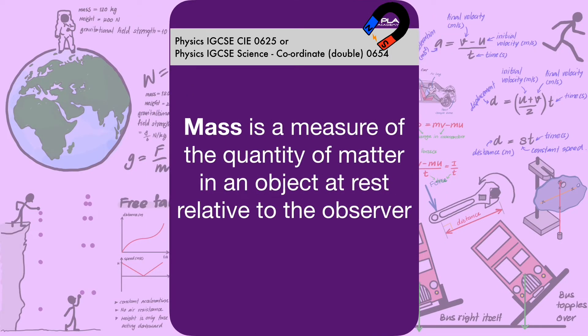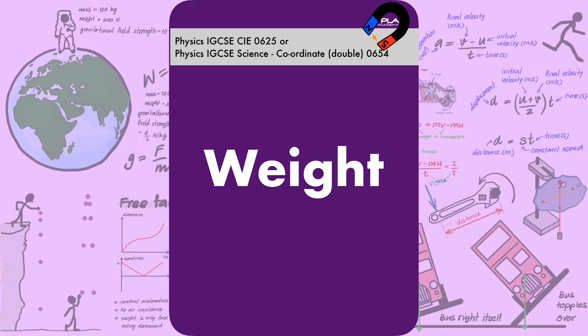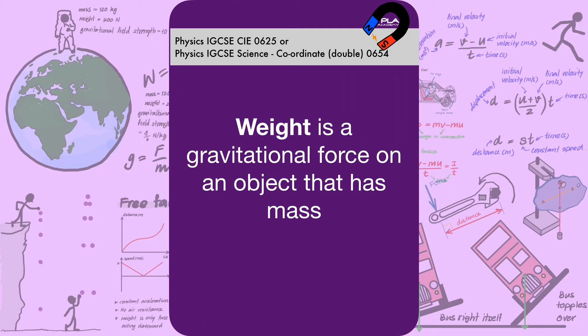Mass. Mass is a measure of the quantity of matter in an object at rest relative to the observer. Weight. Weight is a gravitational force on an object that has mass.